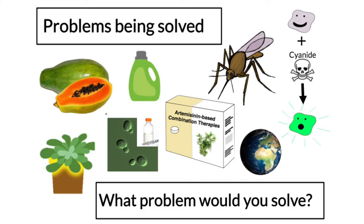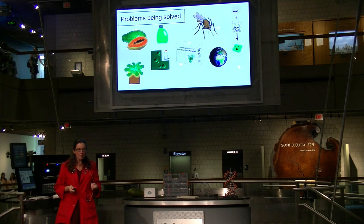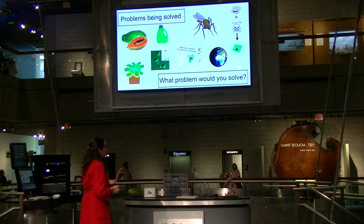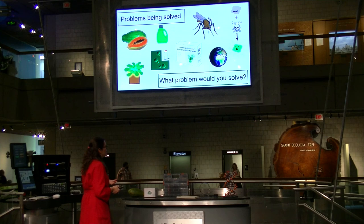There are a lot of different problems being solved with genetic engineering. They've made glowing plants to act as street lights instead of using electricity. We talked about different types of fruits, detergents, and sensors. Pretty much any problem you can think of, genetic engineers are working on a way to biologically engineer something to solve that particular issue. So what problem would you solve by building with biology? I'll leave you with that. If you have any questions or comments, please feel free to come on up. I hope you all enjoy the rest of your day here at the museum.